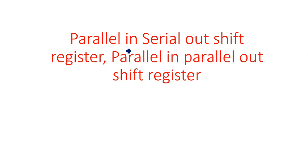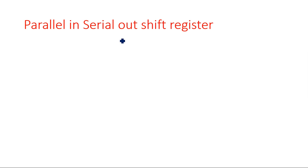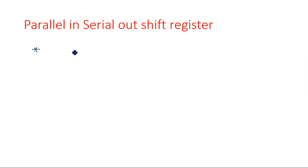Hi everyone. In this video I am going to explain two shift registers: parallel-in serial-out shift register and parallel-in parallel-out shift register. First let us see the parallel-in serial-out shift register. In this type, data enters parallelly at a time to all the flip-flops and leaves serially, meaning we take output from only one flip-flop.